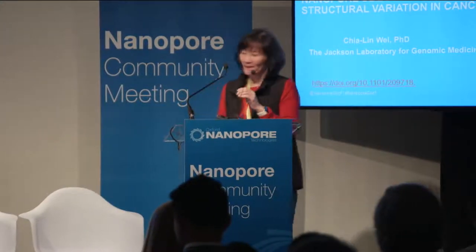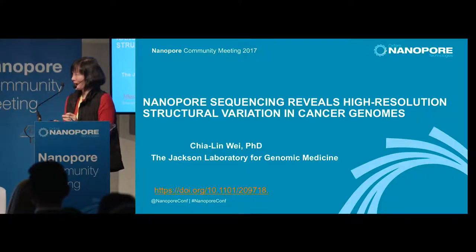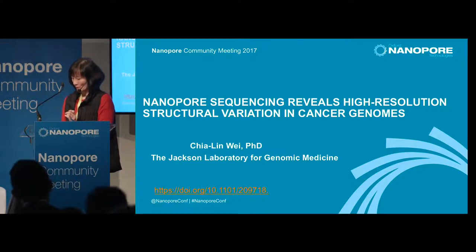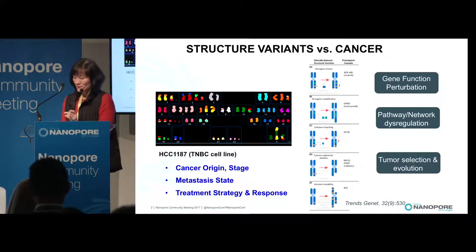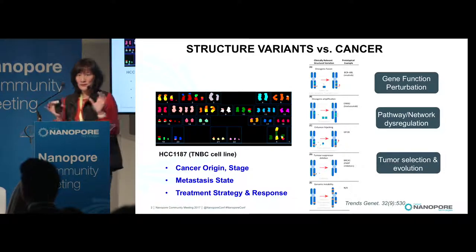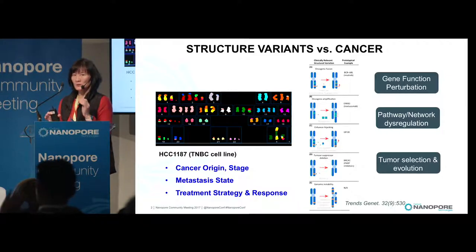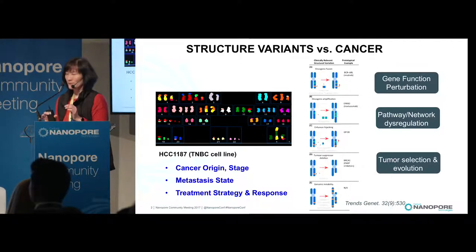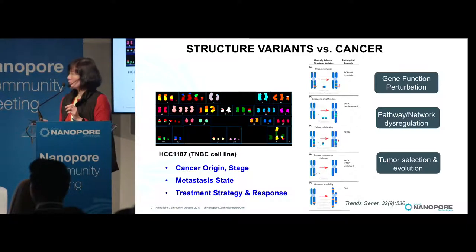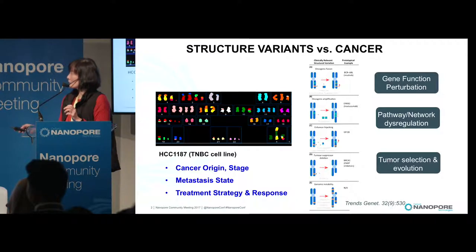Thank you Michael. In the next 10 minutes I'll try to give you some examples of how we use nanopore sequencing to deconvolute complex cancer genomes. Clinical cancer genomics really centers on two areas at very distinct resolutions: one is at a very gross, high level — so-called digital karyotyping and aneuploidy — and the other is mostly centered around gene-specific structural variations.